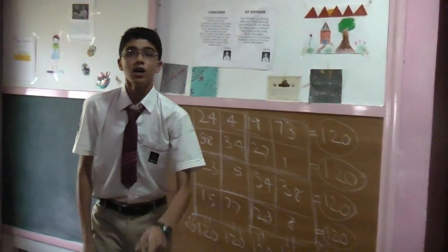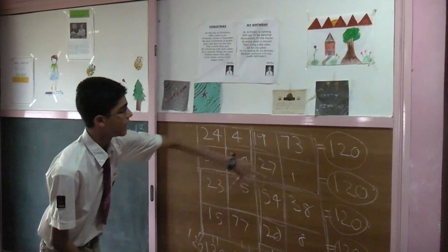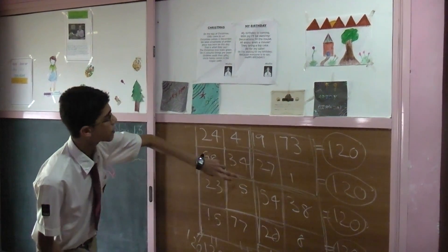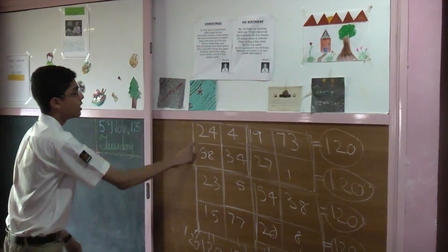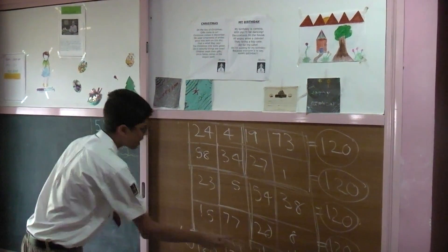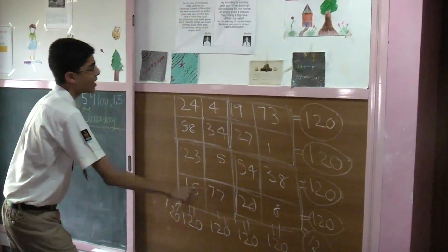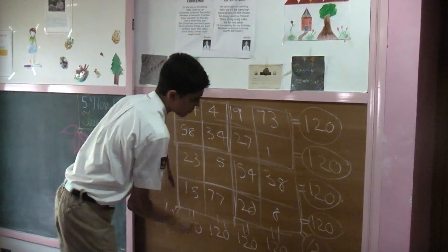But, did I stop there? No. You get these two plus these two will be 120. These two plus these two is 120. These two plus these two is 120. 23 plus 5 plus 19 plus 73 is 120. You add this one plus this one plus this one plus this one, you get 120. 58 plus 27 plus 20 plus 15 is 120. 4 plus 73 plus 38 plus 5 is 120. And finally, 34 plus 1 plus 8 plus 77 is 120.